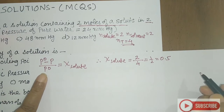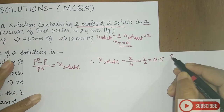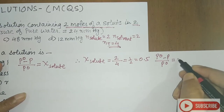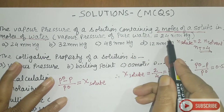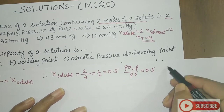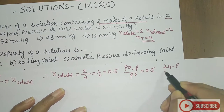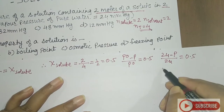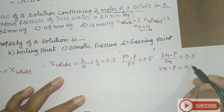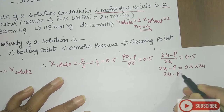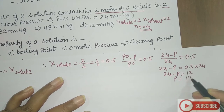From the formula, relative lowering of vapor pressure — that is (P° - P) / P° — equals the mole fraction of the solute. Substituting, (24 - P) / 24 = 0.5, so 24 - P = 12, giving P = 12 mmHg.